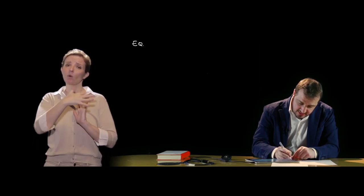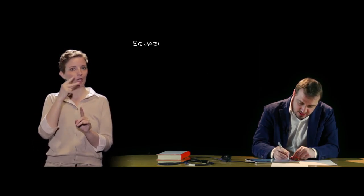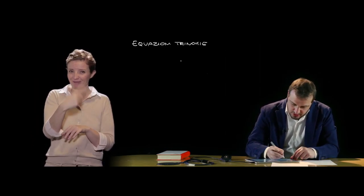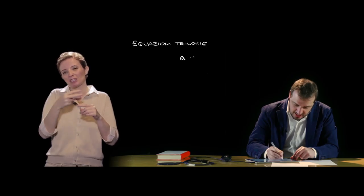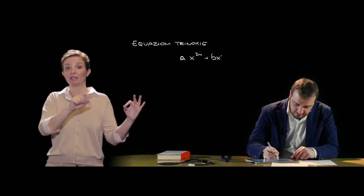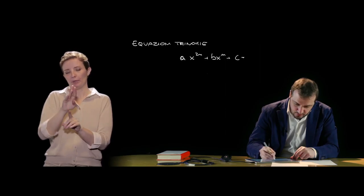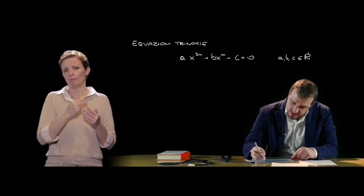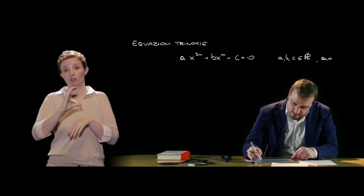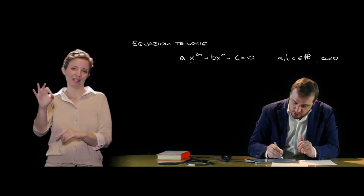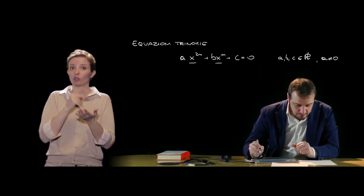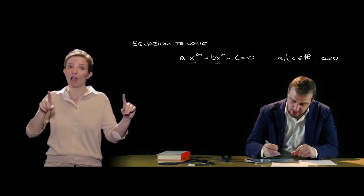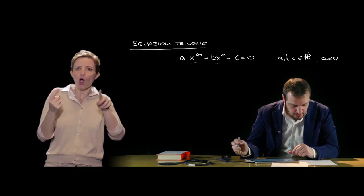Un'altra equazione molto importante di grado superiore al secondo è quella trinomia. Le equazioni trinomie sono riconducibili alla forma ax^(2n) + bx^n + c = 0, dove n è un numero intero positivo e a, b, c sono numeri reali con a ≠ 0. L'incognita compare due volte con due esponenti diversi, l'uno il doppio dell'altro. Questa è la caratteristica delle equazioni trinomie.